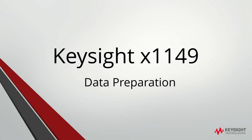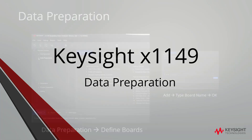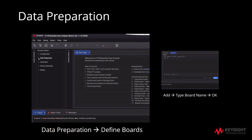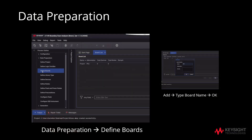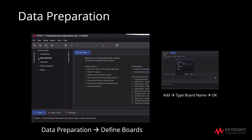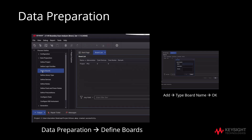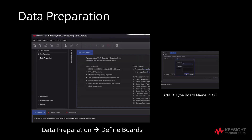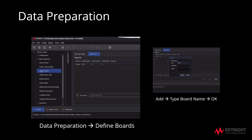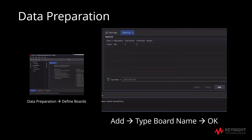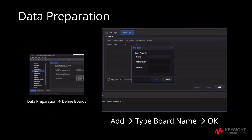Data preparation refers to the setup of the PCB board. Under Process Outline, go to Data Preparation and click on Define Boards. Next, click on Add and type your board name. Finally, click OK.